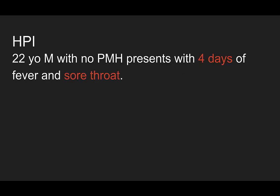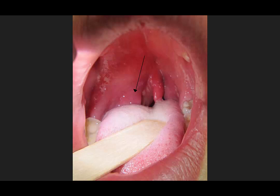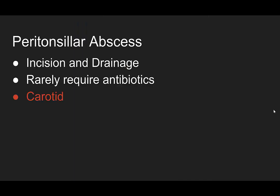This is a 22-year-old male with no past medical history who presents with four days of fever and sore throat. His temperature is 39.2, heart rate of 110, blood pressure of 134 over 86, respiratory rate of 19, satting 100% on room air. At least the fever is real. You'll take a look in his mouth and see this deviated uvula with a large area of swelling just next to his tonsil — peritonsillar, if you will. This is a peritonsillar abscess.